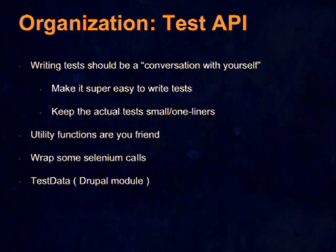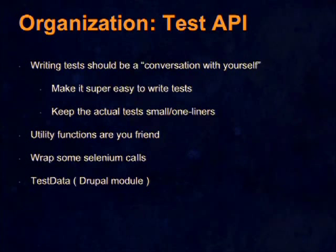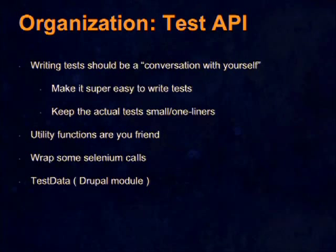I say keep the actual test to small one-liners. You need to register a user — with a user object that says 'register user, done' — next line assert that he was registered or got an email. It's nice to keep them to one line so it reads like a story. Utility functions are your friend. We use a module called Test Data with Drupal. Is anyone familiar with it? Test data is a way to help you get your testing data in an efficient manner.